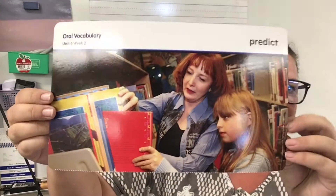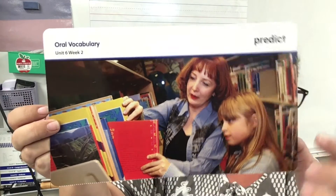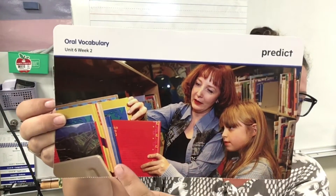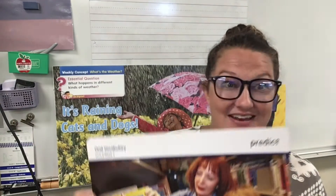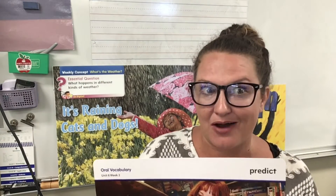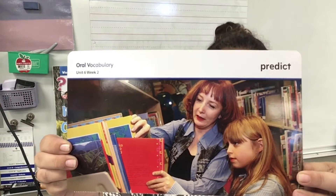Now in a minute we're gonna read a really fun story. But before we do, there are some really fun words we should talk about that will help us with our learning this week. The first one is predict. To predict is to make a guess about what will happen in the future. In this picture, the mom predicts that the girl will like this book — she's guessing she'll like it. Can you predict what the weather will be like tomorrow? Let's say this word together: predict. Now let's clap it out: predict. So once again, to predict something is to make a guess about what will happen in the future.